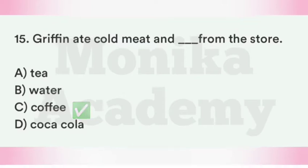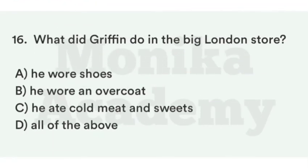Question 16: What did Griffin do in the big London store? Option A: He wore shoes — store बंद हो चुका था, वो चीज़ें चोरी कर रहा था. Option B: He wore an overcoat. Option C: He ate cold meat and sweets. Option D: All of the above. The correct answer is D, all of the above — Griffin ने shoes पहने, overcoat लिया, और cold meat व sweets खाए.